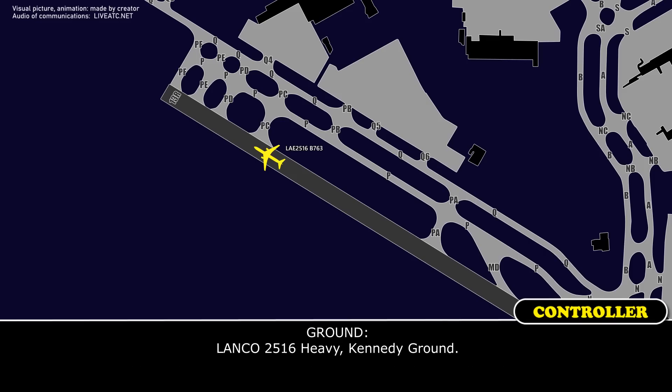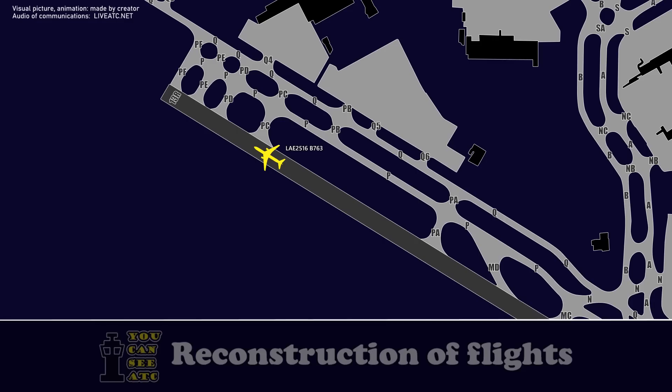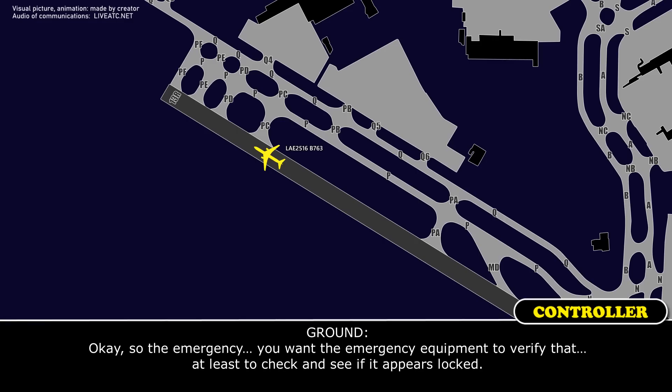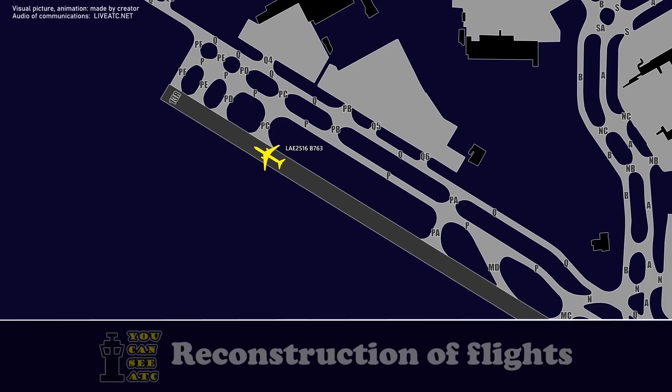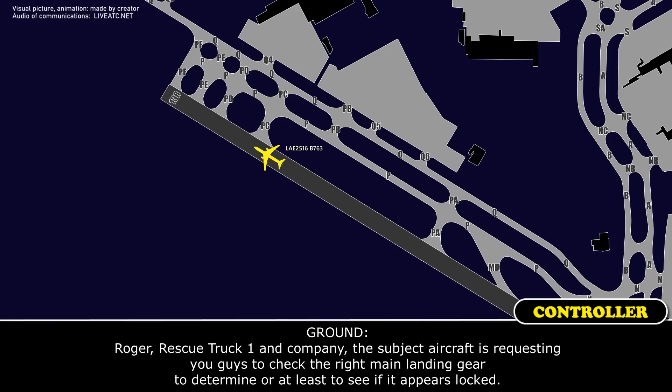Lanco 2516 heavy, Kennedy Ground. The emergency — you want the emergency equipment to verify, or at least check and see if the right gear appears locked? Roger. Rescue truck 1 and company — the subject aircraft is requesting you check the right main landing gear to determine if it appears locked.